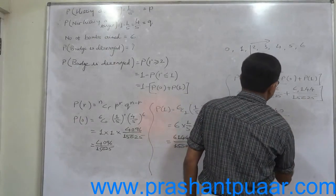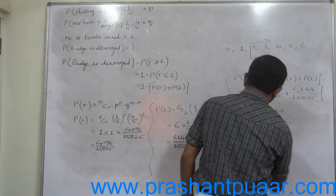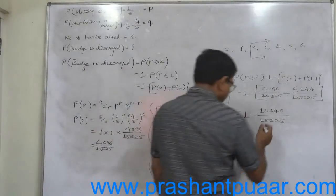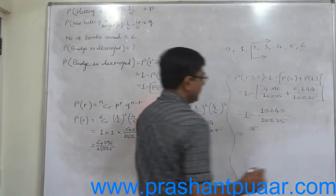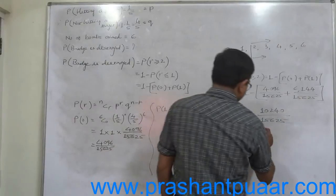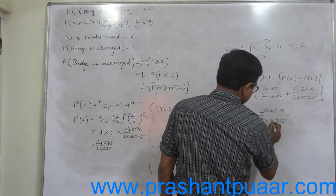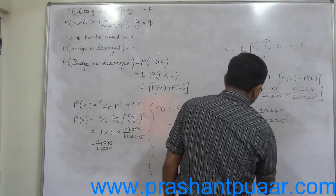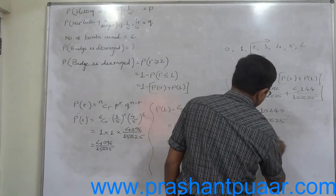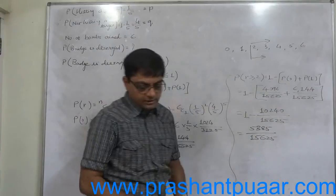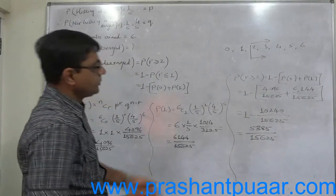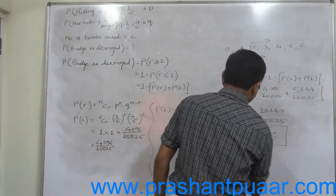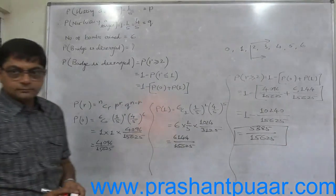15625 minus 10240 is 5385, divided by 15625. Now you can simplify your answer or you can get the answer in decimal values. Thank you.